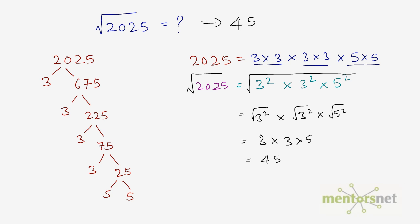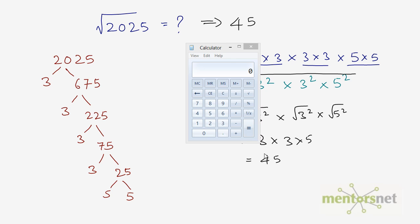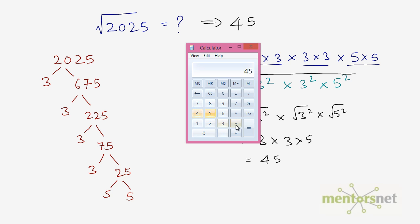Let us verify this with the help of a calculator. So 45 times 45 should come out as 2025. And indeed, 45 times 45 equals 2025. So our answer and our method are correct.